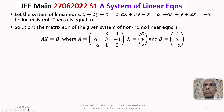For x plus 2y plus z, the first row of A is 1, 2, 1. For the second equation, it is alpha, 3, minus 1. For the third equation, minus alpha, 1, 2. Capital X is the column vector of variables, and capital B is the column vector of the right-hand side values.